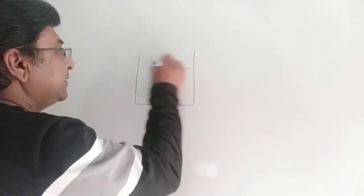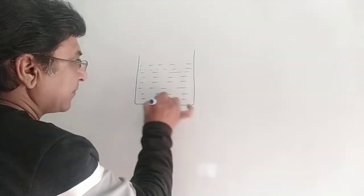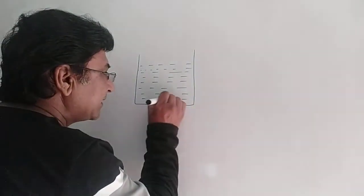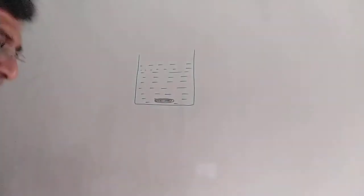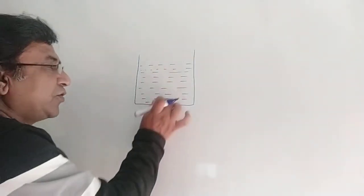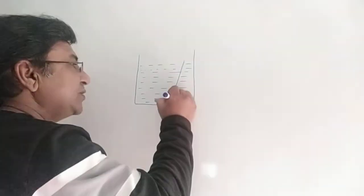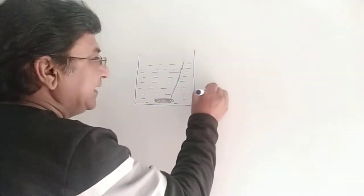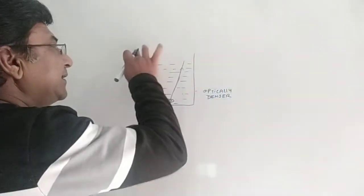Let's say we have a jar with water in it, and we have dropped a coin inside this water. This coin appears above its original position — why? It is because of refraction of light. When we look at the coin, the light from the coin is coming from water to air — from an optically denser medium into an optically rarer medium.